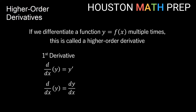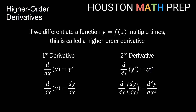If we then take the derivative again of y prime, that gives us the second derivative, y double prime. If we think of it as dy/dx and take the derivative with respect to x again of dy/dx, we get the notation d²y/dx². This is not actually some variable d squared, and we're not squaring x. We have d on the top twice and dx on the bottom twice. So d²y/dx² has nothing to do with squaring — it's just one of the ways we write a second derivative.